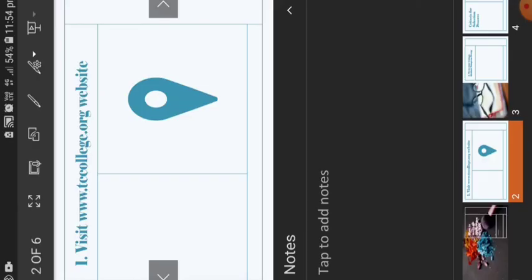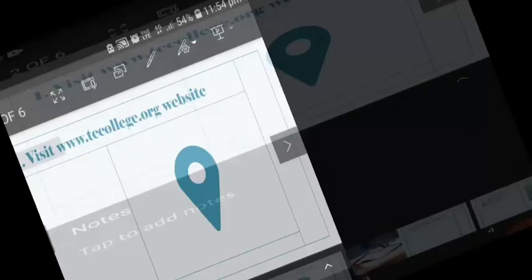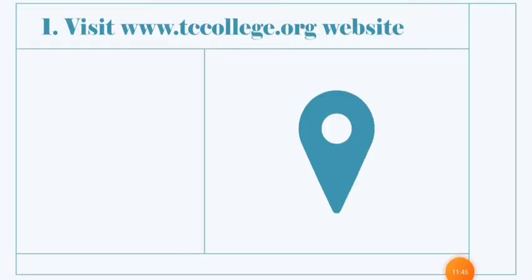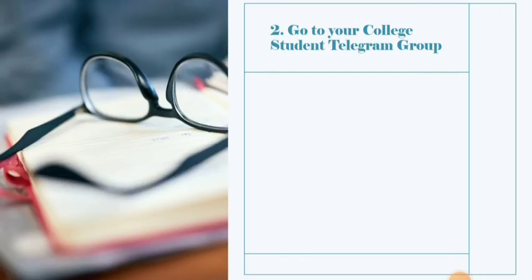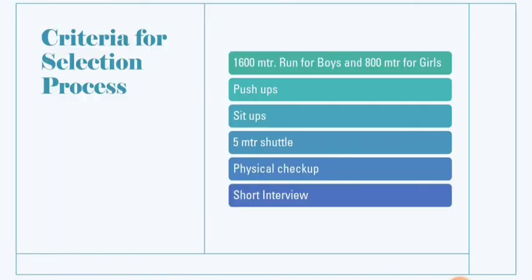There is also a second way to fill up the enrollment form. You can go to the college student Telegram group, where there is a notice and link as well. By clicking that link and following the same steps, you will be joining the Telegram group in the same way.